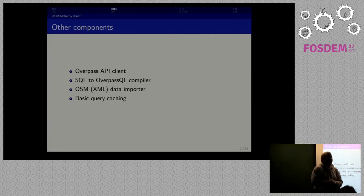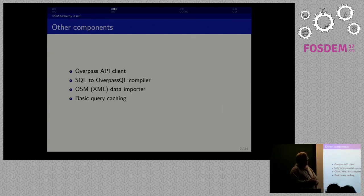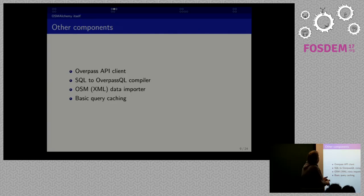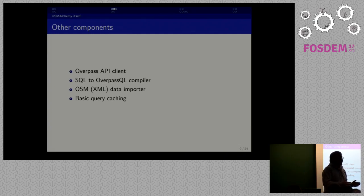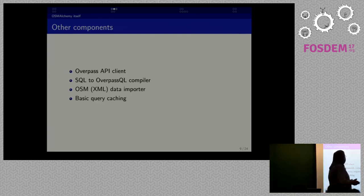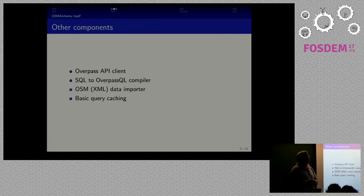We use the Overpass API in the back end, which works a bit better in this case and also allows public access a bit more than the base OpenStreetMap API. The most important component is an SQL-to-Overpass QL compiler. Overpass uses a domain-specific language to query tags, bounding boxes, and all kinds of data, but we wanted developers to only need to use SQL or the SQLAlchemy wrapper. So we built a compiler that takes an SQL query from SQLAlchemy, translates and compiles it into an Overpass QL program, sends it to the Overpass API, and then imports the resulting XML data back. We also implemented caching so OSM Alchemy can figure out that some data is already available and doesn't need to reload it.